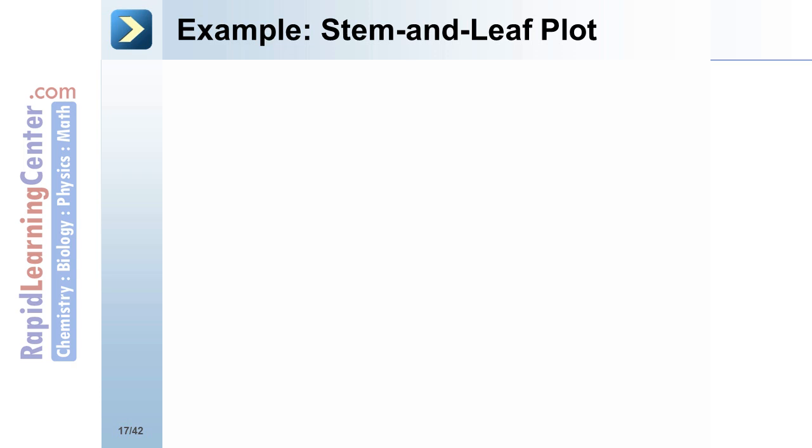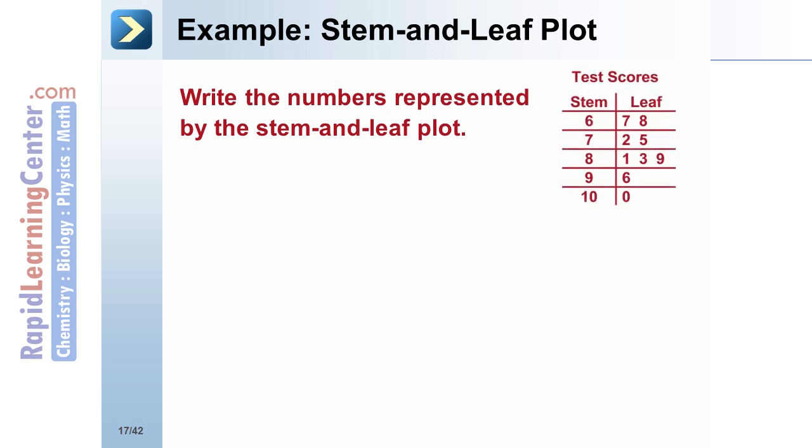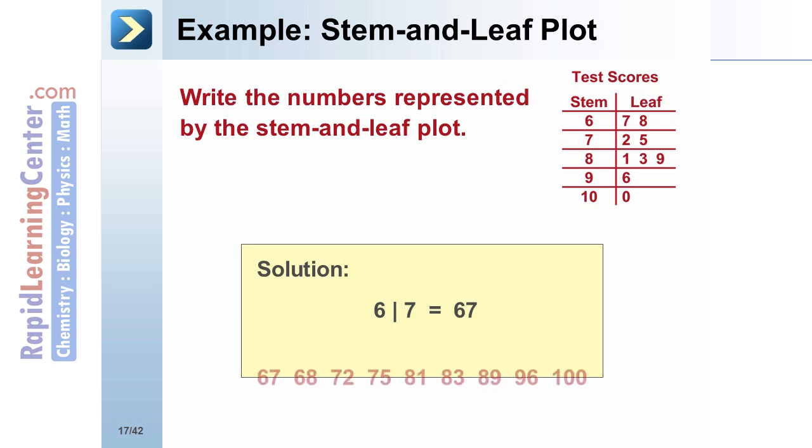Example: Write the numbers represented by the stem and leaf plot. Solution: The stems represent the first part of each number and the leaves represent the last digit. The first number in the data set is 67 because the stem is 6 and the leaf is 7. The numbers represented by this plot are 67, 68, 72, 75, 81, 83, 89, 96, and 100.